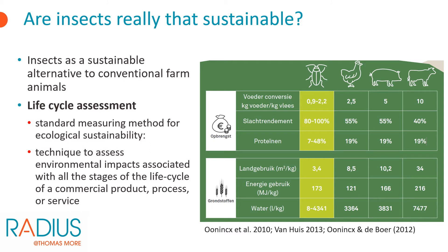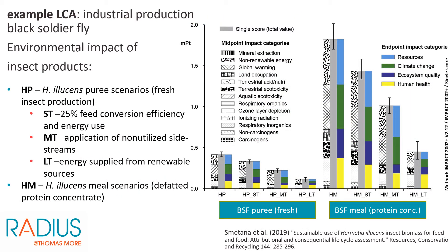This is done using a life cycle assessment, or LCA — a standard measuring method to assess the environmental impacts associated with all the stages of the life cycle of a commercial product, process, or service. A recent LCA on black soldier fly larvae conducted at Protex shows which aspects of the production process play an important role in ecological sustainability. The ecological impact was compared for BSF puree, the fresh product, and BSF meal, the protein concentrate. The impact of processing immediately becomes clear. It was also determined how adjustments to the current process influence the impact — for example, optimizing the feed conversion, the use of waste streams, and the use of renewable energy are important factors that can reduce the impact.